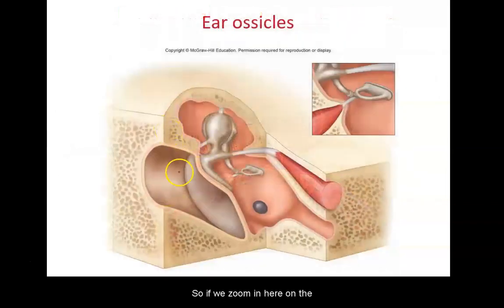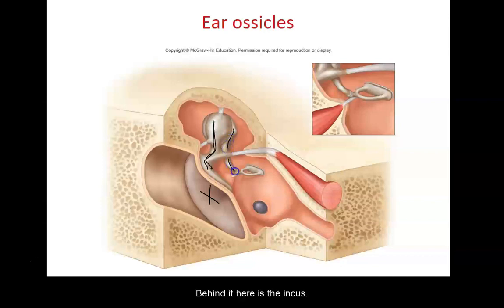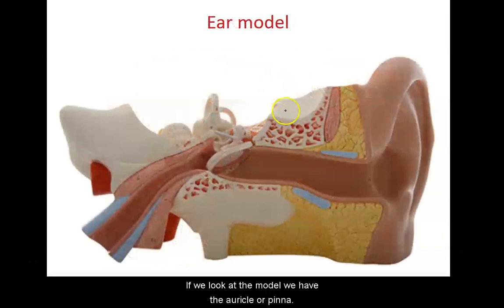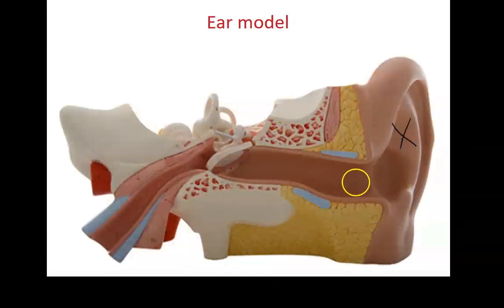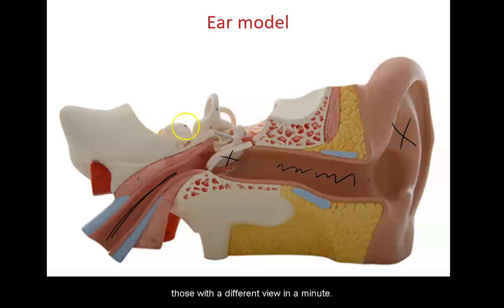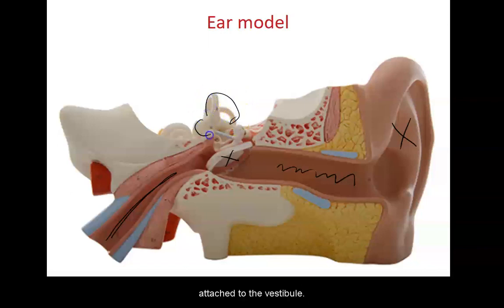Zooming in on the tympanic membrane, we can see the malleus, behind it the incus, and then the stapes. Here is the beginning of the pharyngotympanic or eustachian tube. On the model we have the auricle or pinna, the external auditory canal, the tympanic membrane, and the pharyngotympanic tube. The bones are a little tricky to see here so we'll look at those in a different view. You can see part of the cochlea coiled up here and part of the semicircular canals attached to the vestibule.